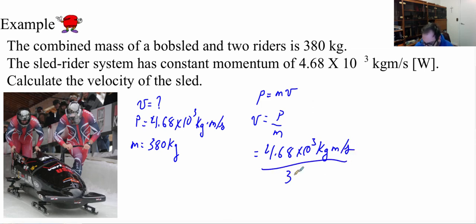And divide that by my mass of 380 kilograms. And this is west. I should always keep my direction there. So my kilograms cancel off and I'm going to be left with 12.3 meters per second, and we have to keep our direction west.